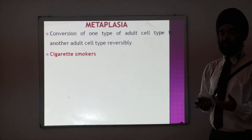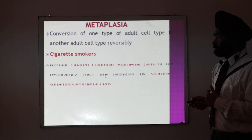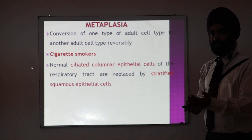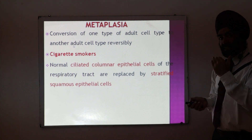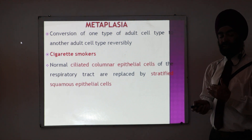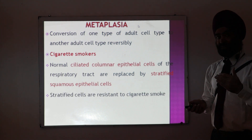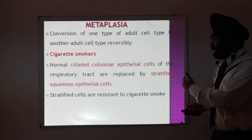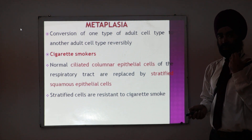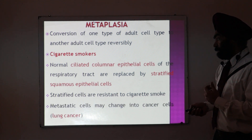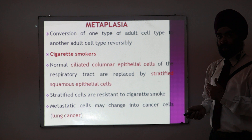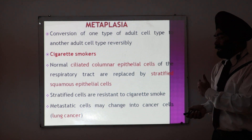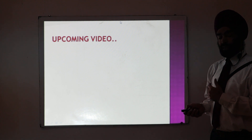Why and where can metaplasia take place? A very common example is cigarette smokers — because of the smoke that is inhaled, the ciliated columnar epithelial cells are converted into multilayered stratified squamous epithelial cells. The single layer cells are more weak and susceptible to injury, whereas the stratified multilayer cells are much more resistant to cigarette smoke. So it is an adaptation of the respiratory system to protect from cigarette smoke. However, this adaptation is not ultimately useful for the body, because these metaplastic cells can change into cancer cells and lung cancer can develop.